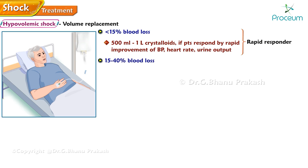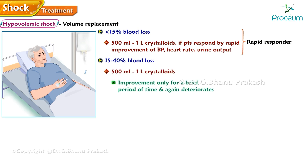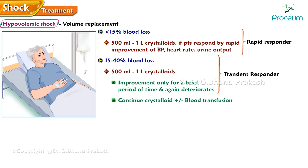If there is 15 to 40% blood loss, 500 milliliters to one liter of crystalloids are given. If the patient improves only for a brief period of time and then again deteriorates, they are categorized as a transient responder.